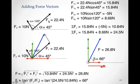Let's break these vectors into components, starting with F1. It has a horizontal component and a vertical component. Because it's at 45 degrees, those two components should be equal. The horizontal part is the adjacent side, so F1x equals 22.4 Newtons times cosine of 45 degrees, giving us 15.84 Newtons. The vertical component, as expected at 45 degrees, is 22.4 Newtons times sine of 45 degrees — also 15.84 Newtons. These two are the same.